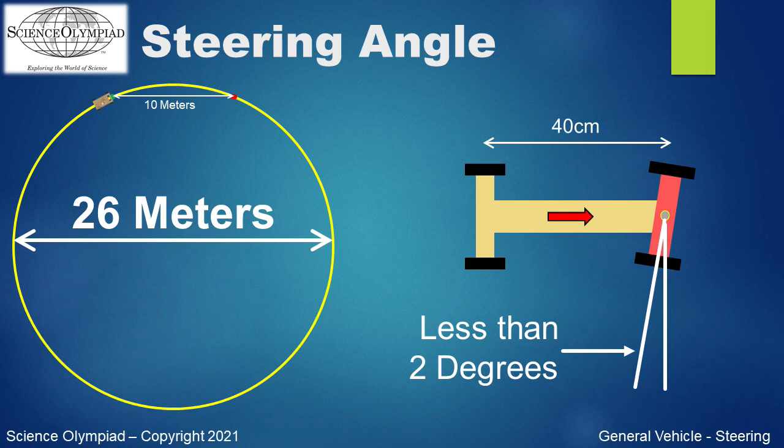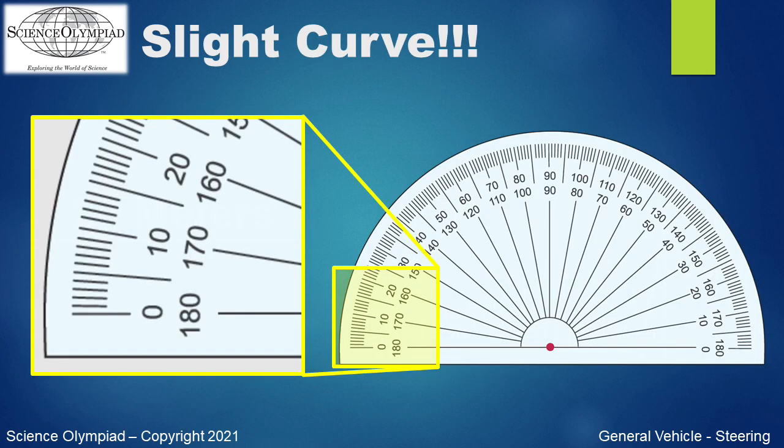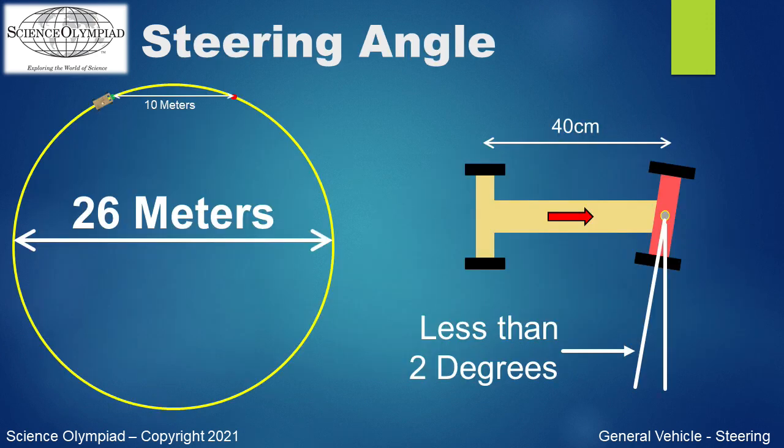For reference, a protractor is shown. The axle is rotated less than 2 degrees or 2 ticks of this protractor. That is a very small angle. Using a protractor to set the axle rotation would not be a good idea when just using 2 ticks.